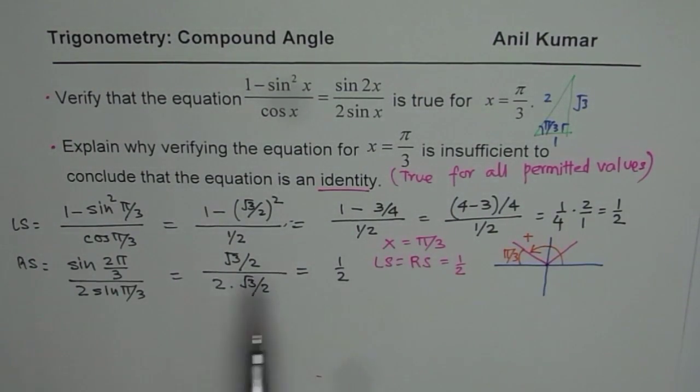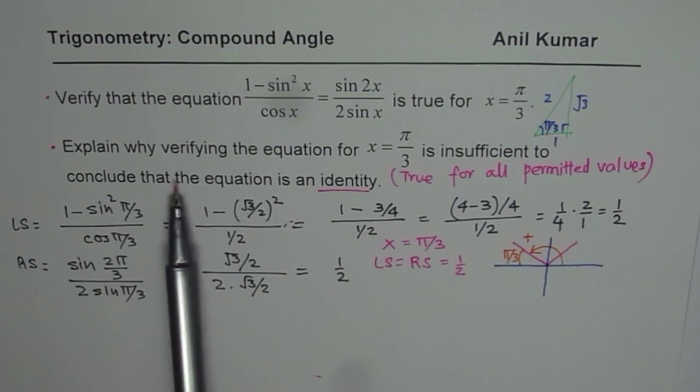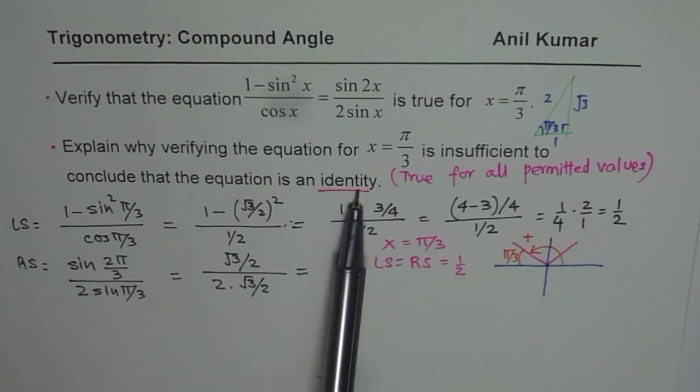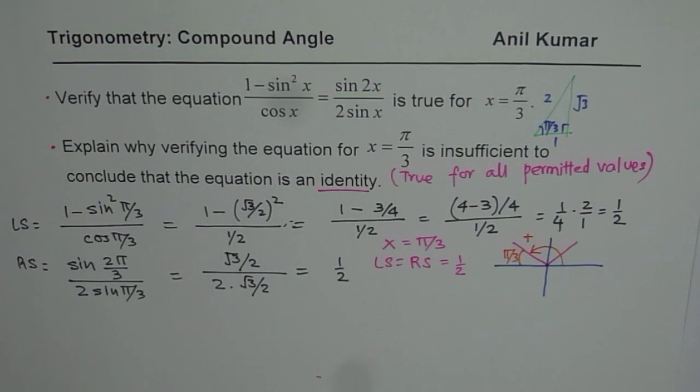Now the question is: explain why verifying this is insufficient to conclude that the equation is an identity. We are not sure whether this equation is true for other values, and therefore we cannot say that it is an identity.